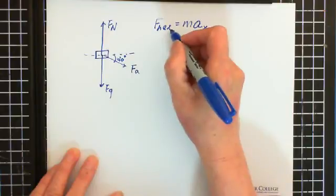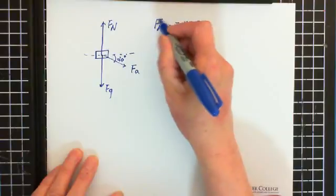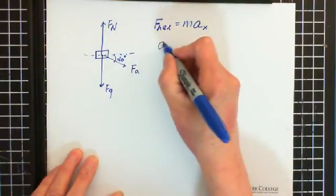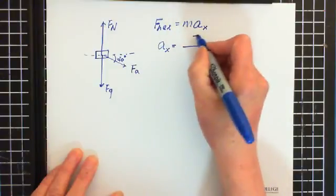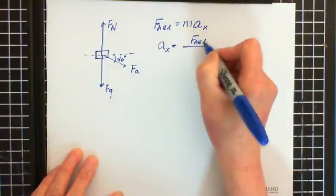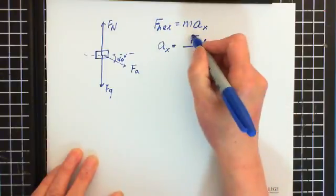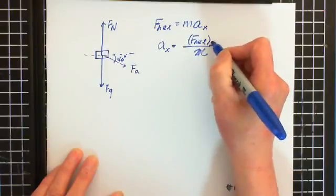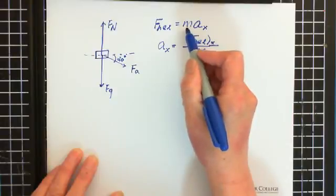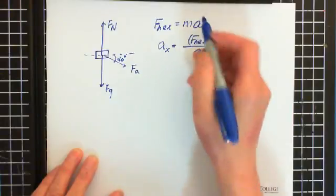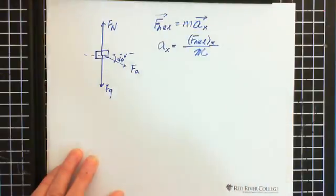So the net force is in the horizontal direction. We're looking for acceleration: Ax equals F-net over M. Because the acceleration is horizontal, the net force is horizontal. By Newton's law, mass is a scalar, so the direction of acceleration is the direction of the net force.